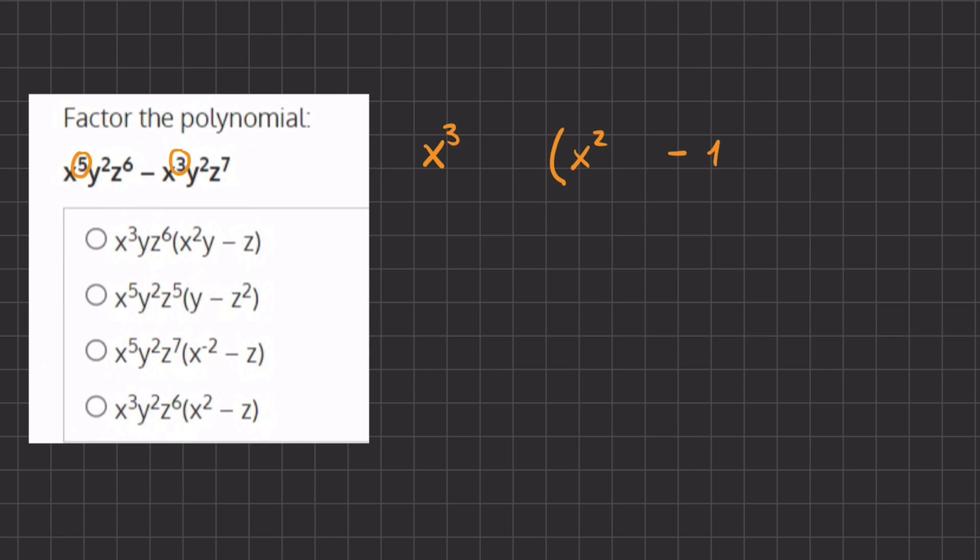All right, so now let's take a look at y. Here we have y to the power of 2 and also y to the power of 2, so that will be our common factor, and we are left with 1 in both of our terms.